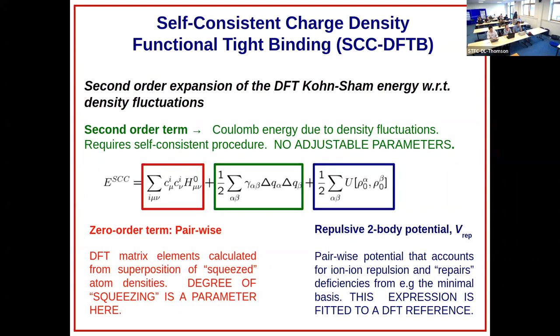It makes up for many of the terms that we are neglecting in working with this minimum basis valence-only approximation. As Balint already alluded to in his presentation, this repulsive is typically represented by a two-body energy expression, a simple analytical expression where you are just considering pairwise energy terms.